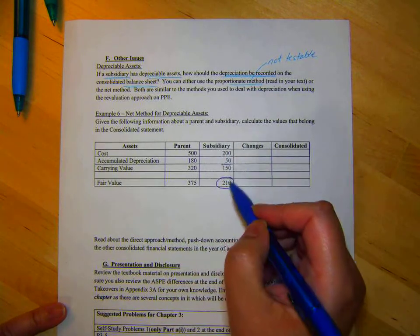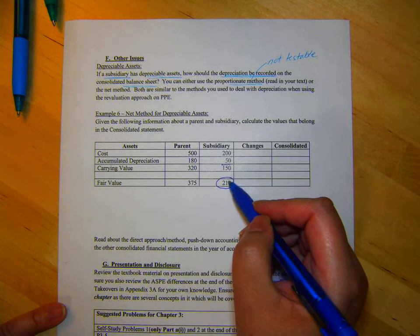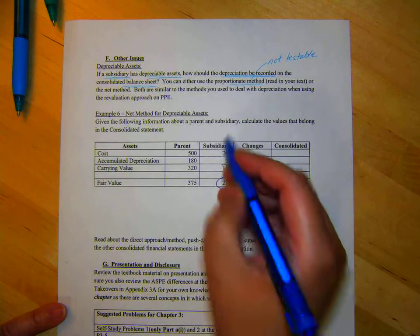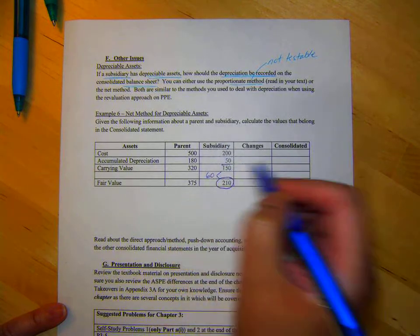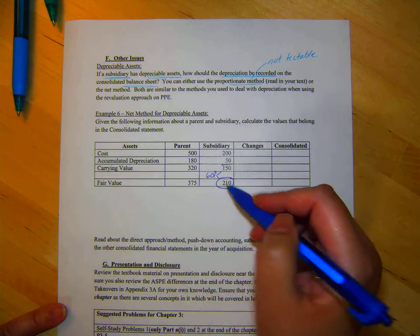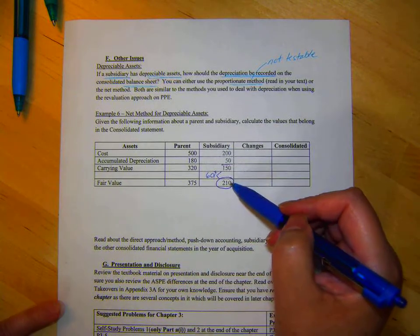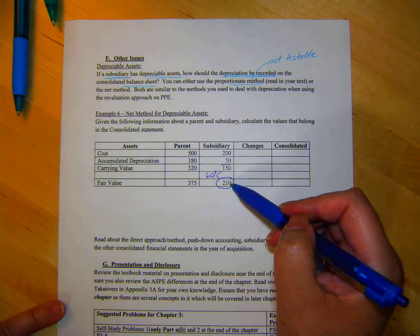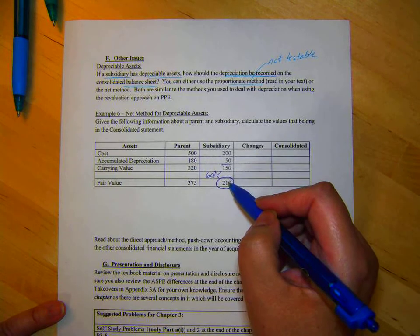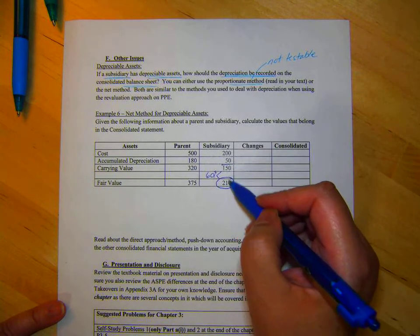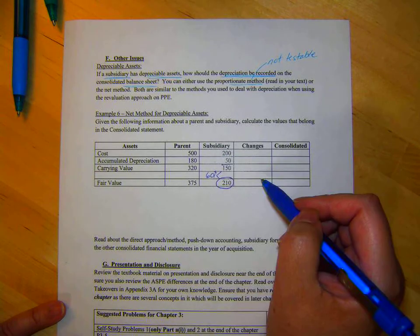So the question is, we should be adding the 500 plus the 210. But we've got these numbers here that are messing things up. So how should we allocate the difference here between the 150 and 210, which is 60? How should we allocate it? So the proportionate method breaks this over this into percentages and then multiplies it by these two things.